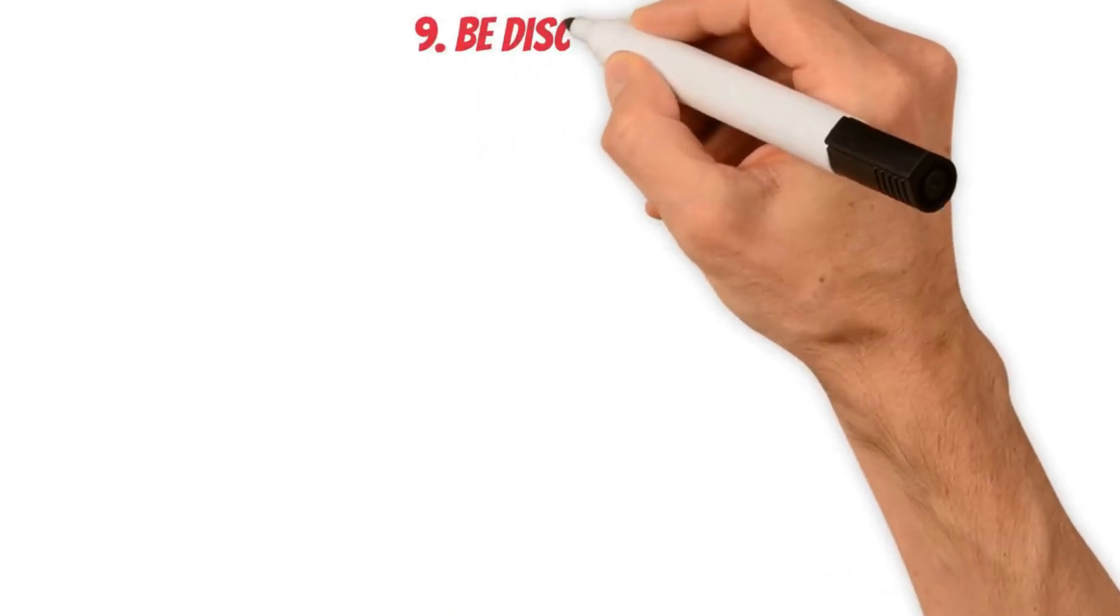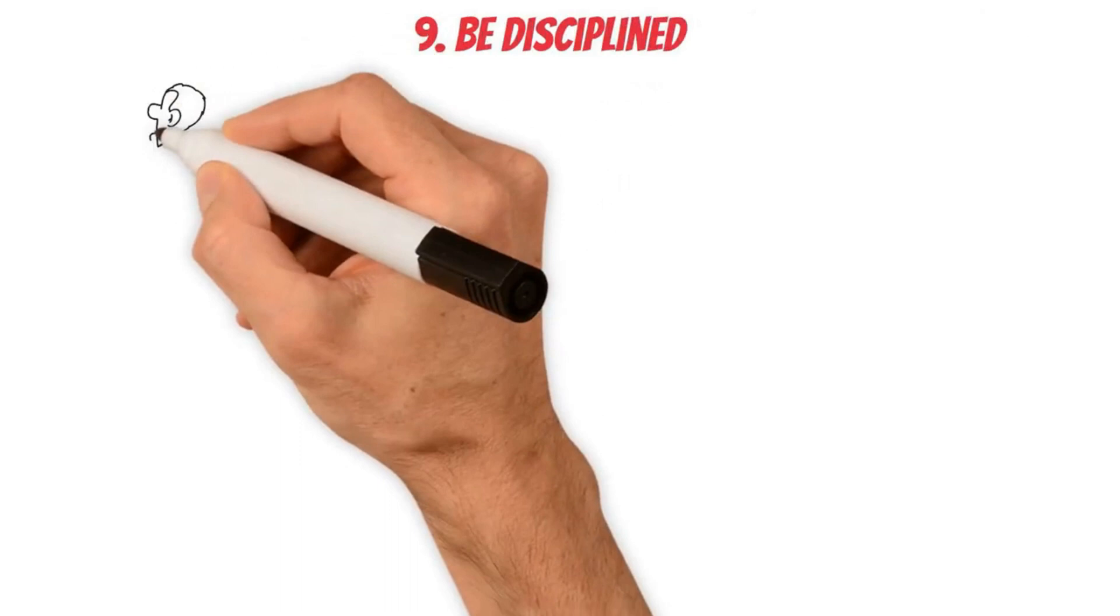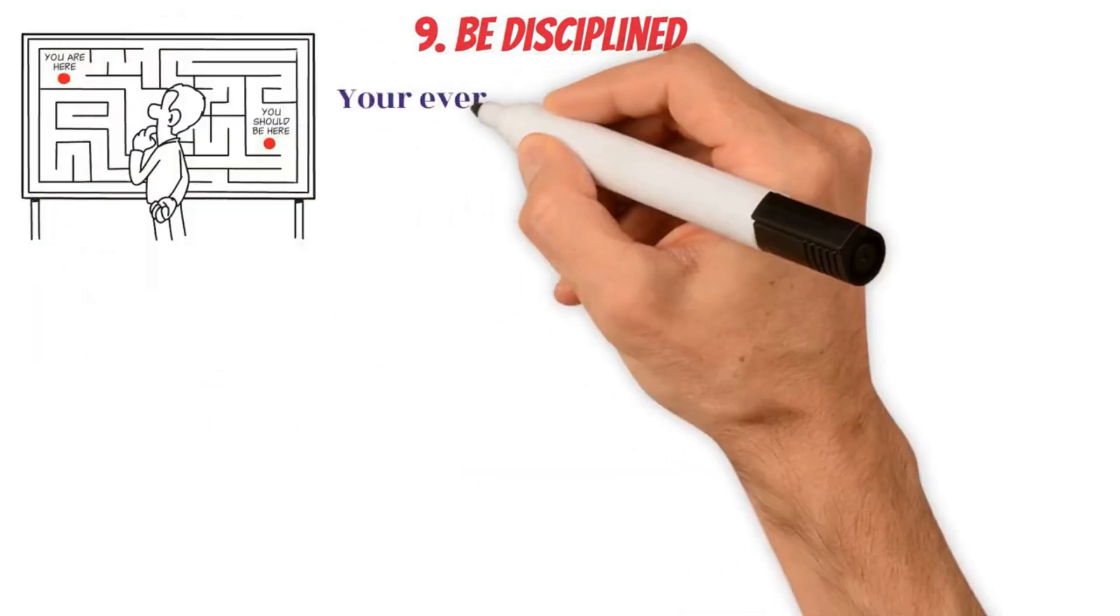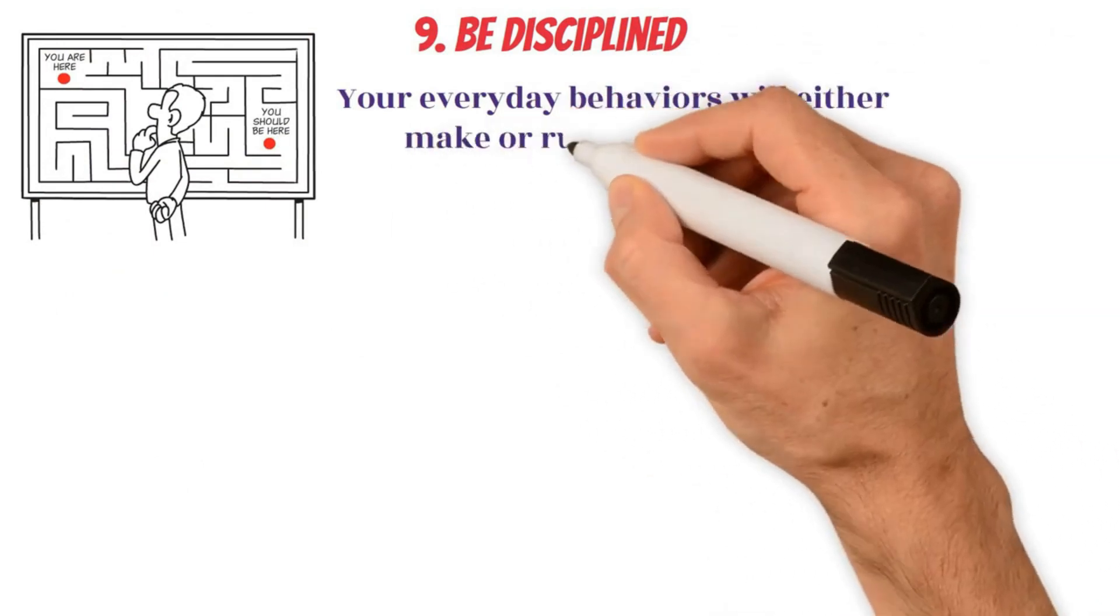9. Be disciplined. Wealth is the accumulation of numerous small decisions and acts over a lifetime. Your everyday behaviors will either make or ruin your success.